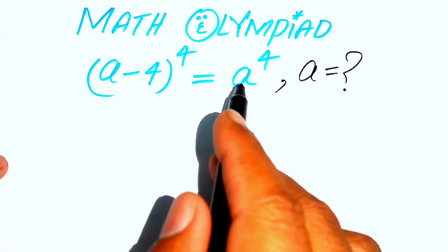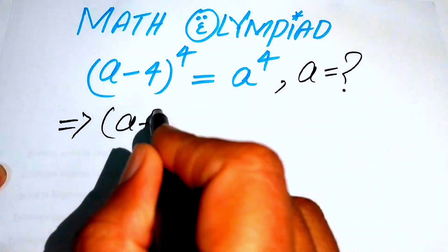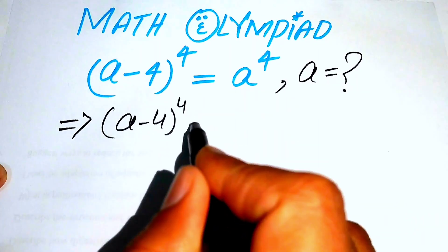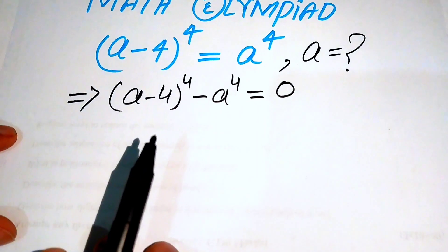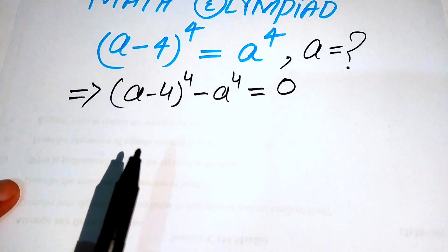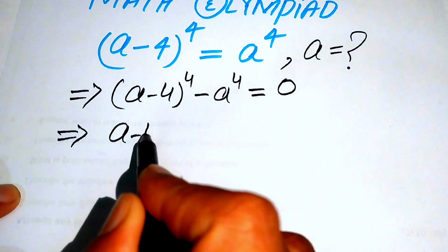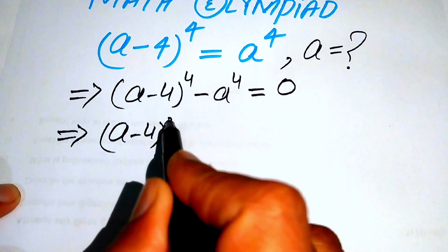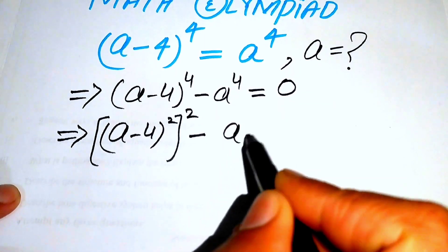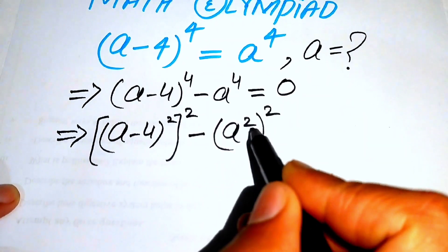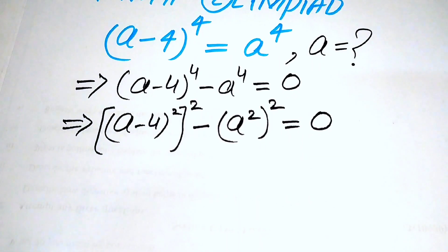The first step is to move a⁴ to the left hand side, giving us (a - 4)⁴ - a⁴ = 0. We then rewrite this as [(a - 4)²]² - [a²]² = 0.